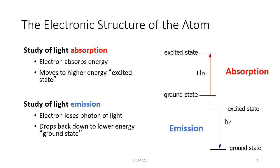We will see that electrons live in energy levels. The lowest energy level an electron can live in is called the ground state. If an electron gains energy, it can jump up from that ground state to some higher excited state. This is called absorption. Once the electron relaxes, it can fall down from the excited state back to a lower level or back down to the ground level. This process is called emission.